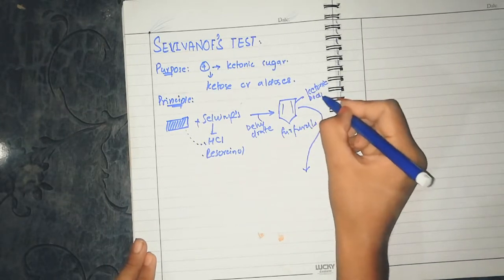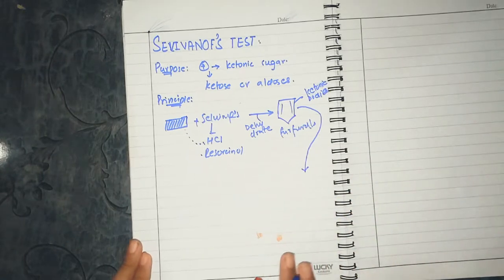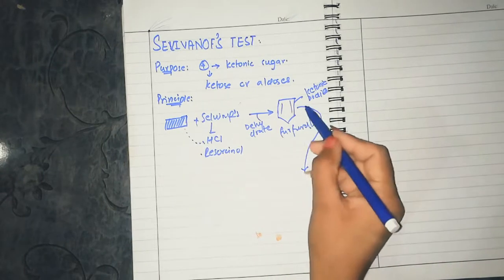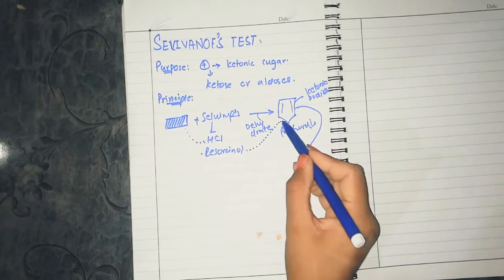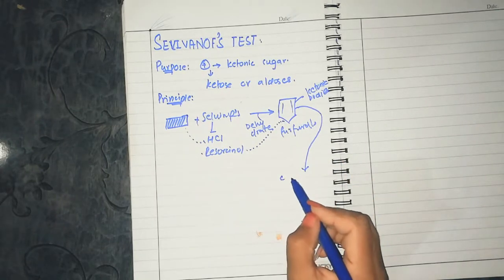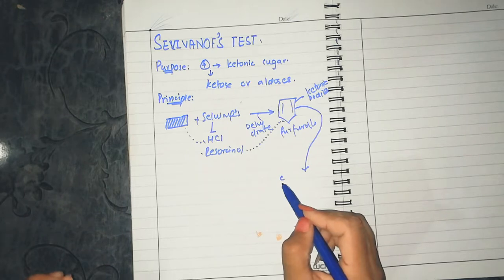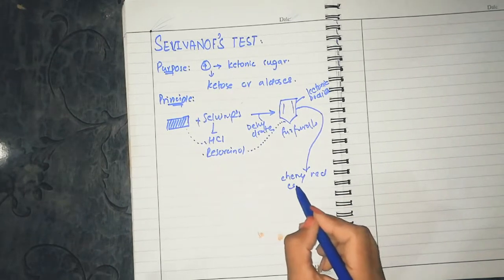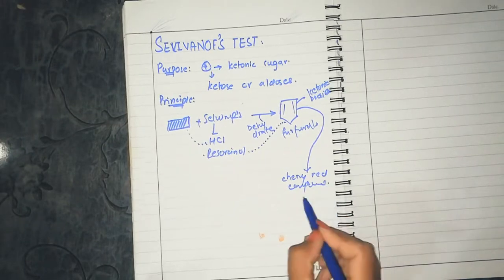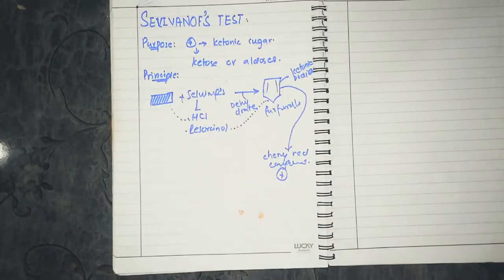If we have ketonic bodies, keto-hexoses or ketonic derivatives, they will react with resorcinol. This reaction gives a cherry red compound, which indicates a positive test.